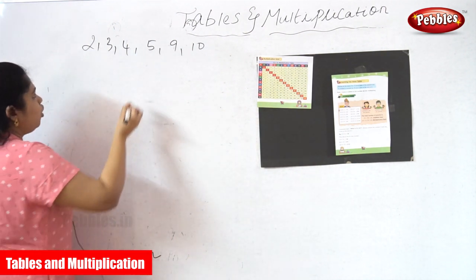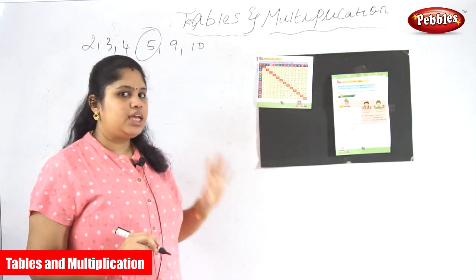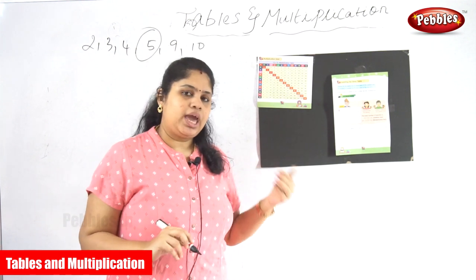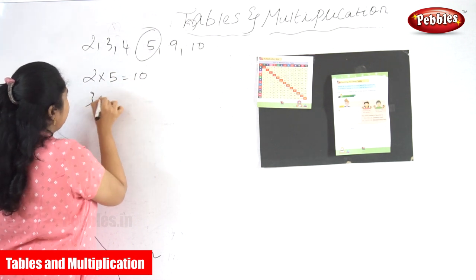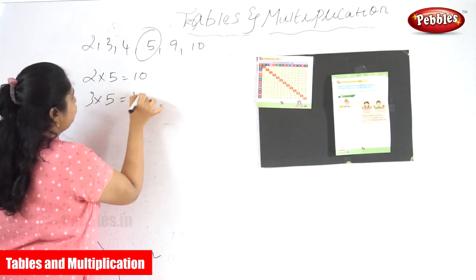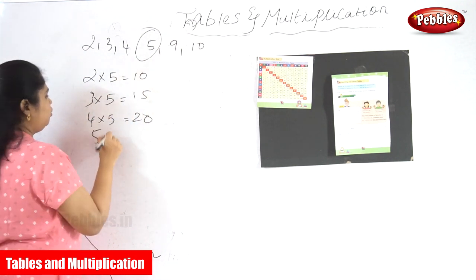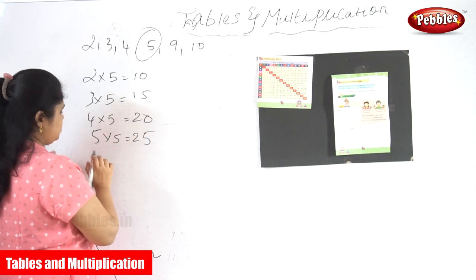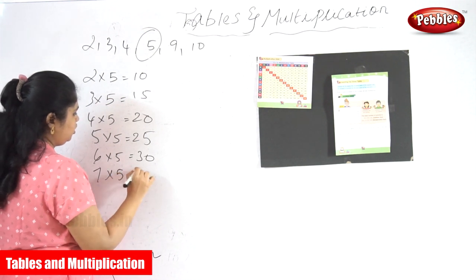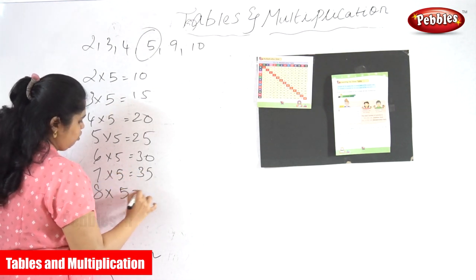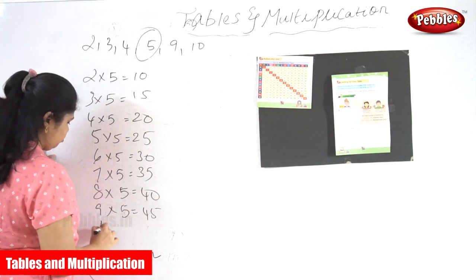So using the 5 table: 2 into 5 is 10, 3 into 5 is 15, 4 into 5 is 20, 5 into 5 is 25, 6 into 5 is 30, 7 into 5 is 35, 8 into 5 is 40, 9 into 5 is 45, 10 into 5 is 50.